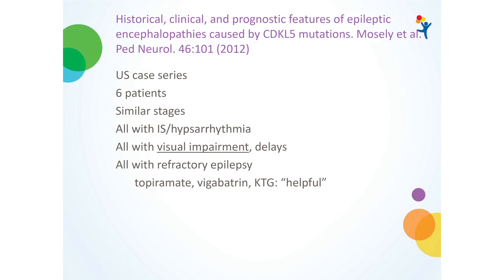There was a U.S. case series from the Mayo group — 'Historical, Clinical, and Prognostic Features of Epileptic Encephalopathies Caused by CDKL5 Mutations' — six patients. They noted similar three stages as the French group. All of them had stage 2 — infantile spasms with hypsarrhythmia. This was the first paper to really emphasize visual impairment. All of their patients had refractory epilepsy. In terms of what might help seizure frequency, they said topiramate, vigabatrin, and the ketogenic diet were helpful, though not giving specific numbers on seizure reduction.